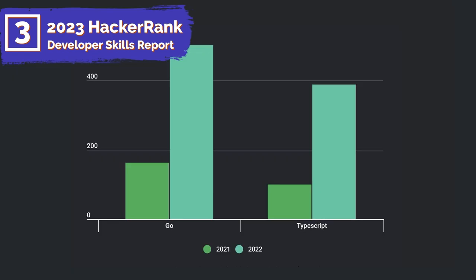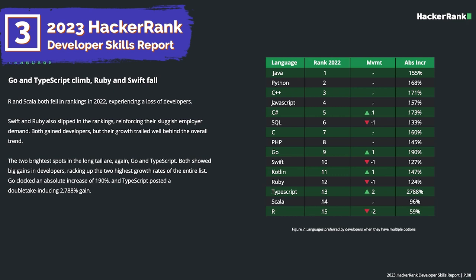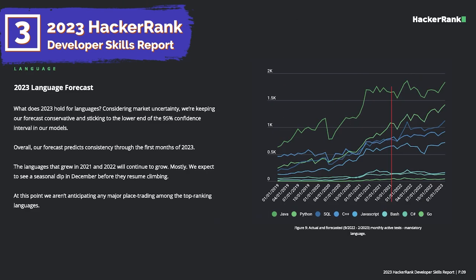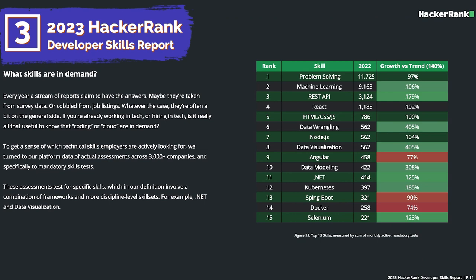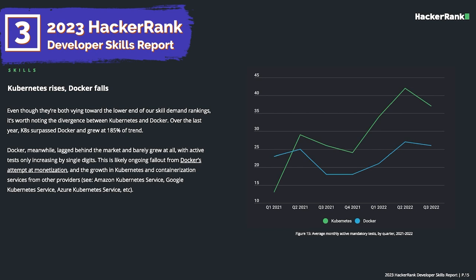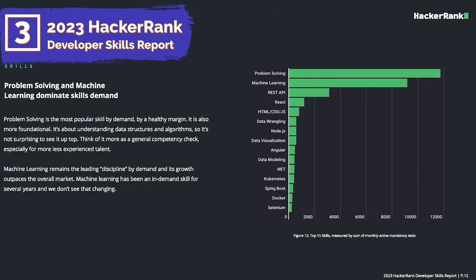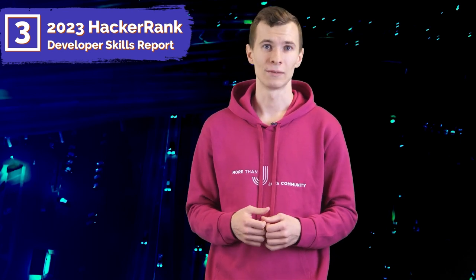Trailing far behind these languages, but ranked at 6 to 10 respectively, were Bash, C#, Go, TypeScript, and R. Among the leaders, demand for TypeScript and Go grew fastest in 2022, as did demand for PHP. Erlang and Scala experienced a loss of developers in 2022. Languages that grew in 2021 and 2022 are expected to continue to grow in 2023, including Java, Python, and SQL. The demand for REST API skills grew by 179%. Demand for Docker skills has been eclipsed by that for Kubernetes container orchestration skills. Employer and developer demand for data science and machine learning skills is growing. Overall, the tech industry continues to grow, although growth in 2022 slowed compared to 2021. We will drop the link in the description to this report.